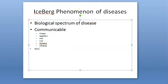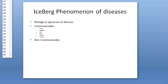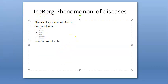For non-communicable diseases showing iceberg phenomena, we have hypertension and diabetes. A small population is known to have hypertension and diabetes, but a larger population actually has these conditions which are undiagnosed.